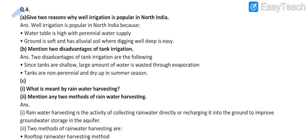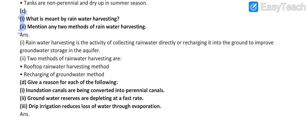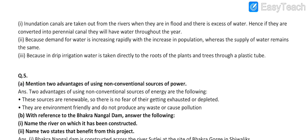Fourth question: Part A, Part D, Part C (first and second parts), and Part D again having three sub-parts. These are the answers of D's three parts.